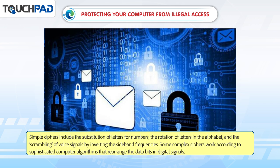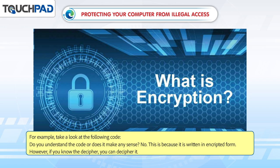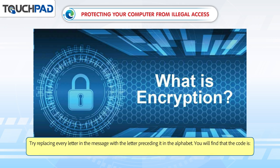Simple ciphers include the substitution of letters for numbers, the rotation of letters in the alphabet, and the scrambling of voice signals by inverting the sideband frequencies. Some complex ciphers work according to sophisticated computer algorithms that rearrange the data bits in digital signals. For example, take a look at the following code. This is written in encrypted form. However, if you know the decipher key, you can decipher it — try replacing every letter in the message with the letter preceding it in the alphabet, and you will find the decoded message.